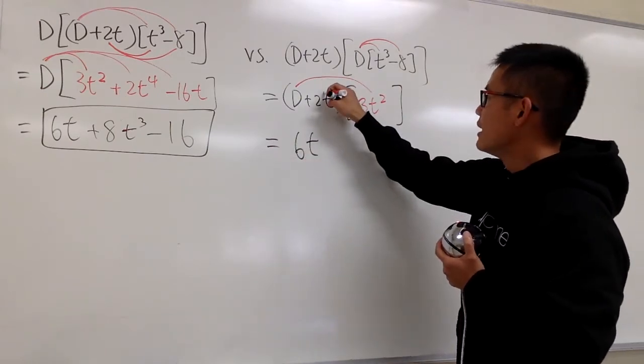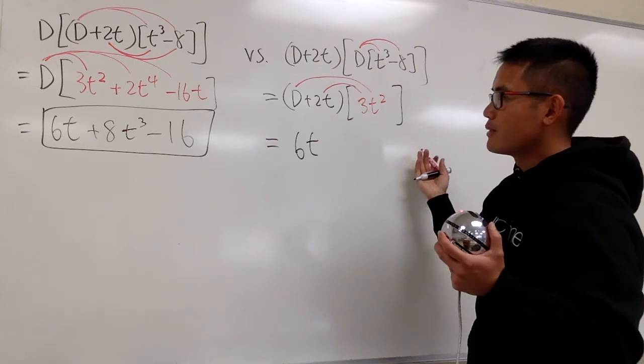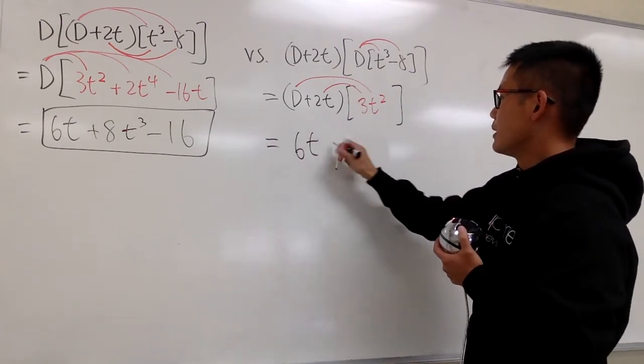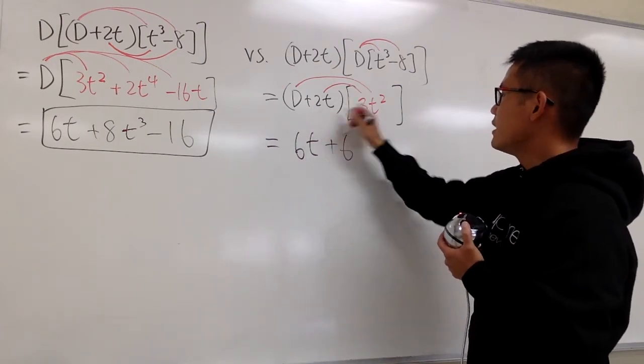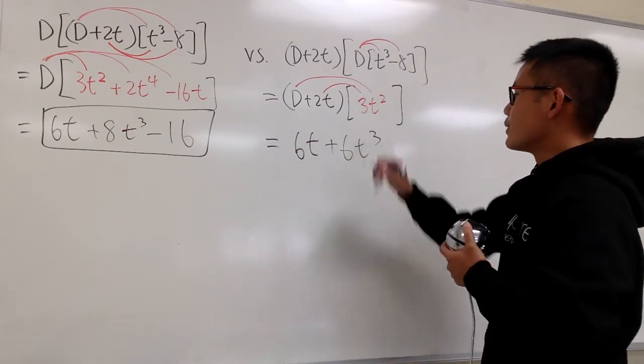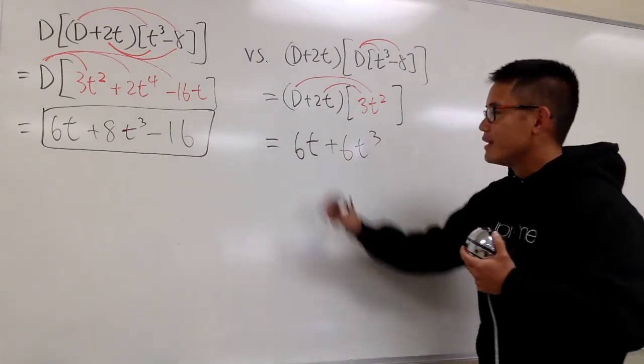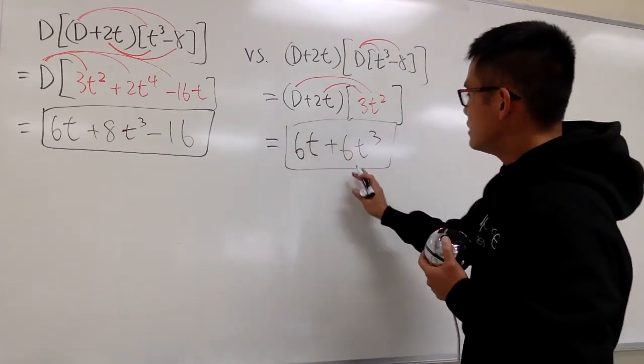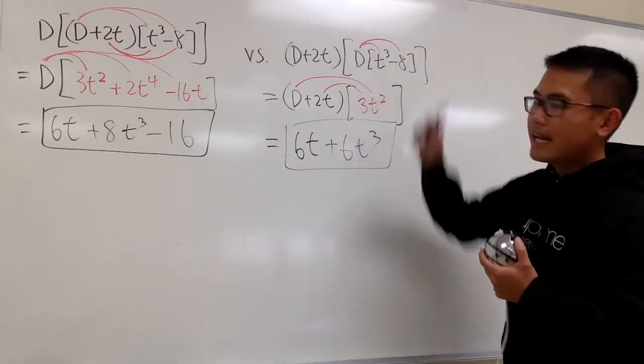Then I will multiply regularly. 2 times 3 is 6, and T times T squared is T to the third power. So we have 6T plus 6T to the third power. This will be the result for that.